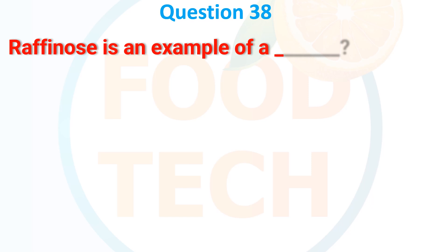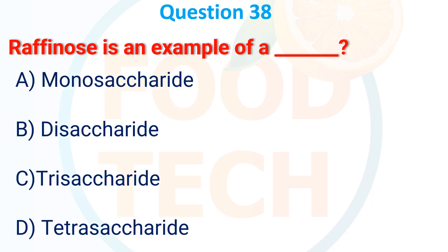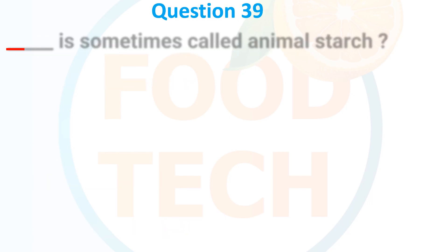Question 38: Raffinose is an example of — A. Monosaccharide, B. Disaccharide, C. Trisaccharide, D. Tetrasaccharide. The answer is C. Trisaccharide.